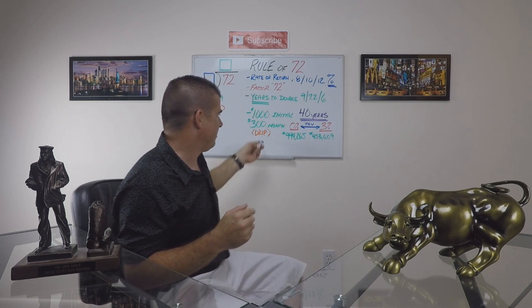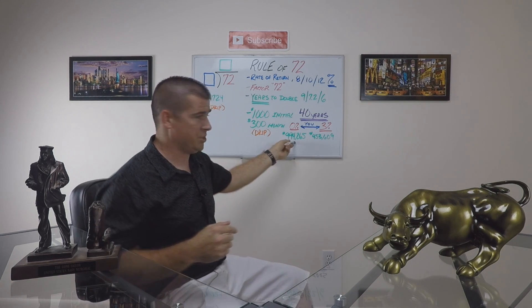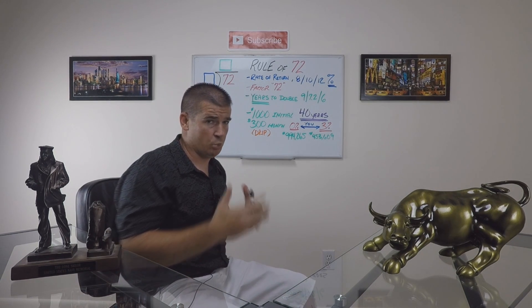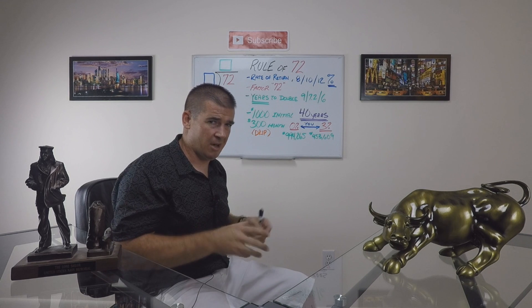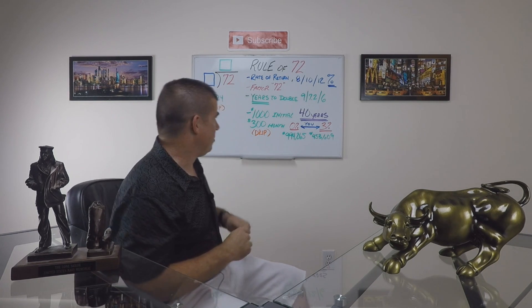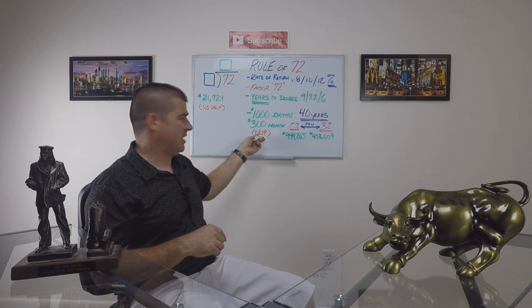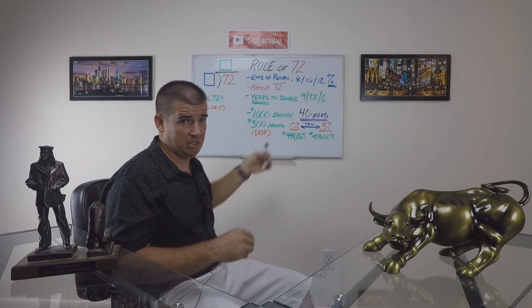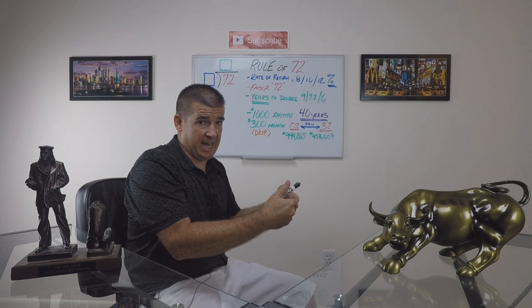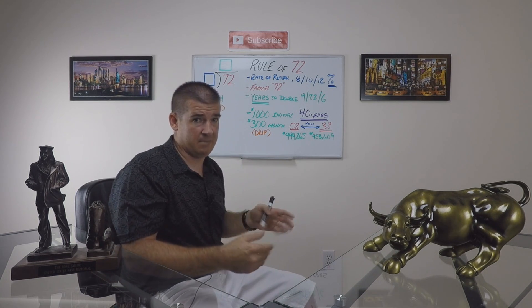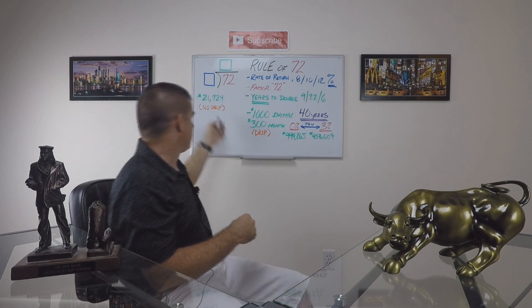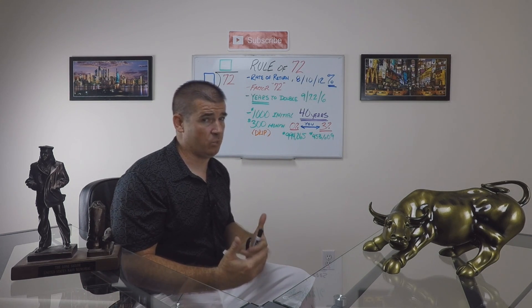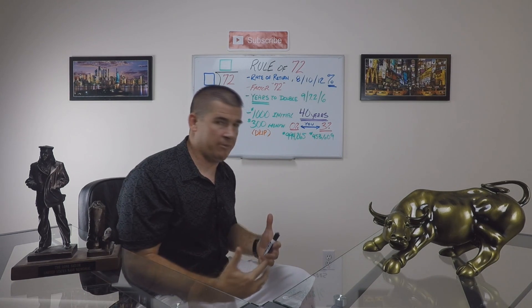A final thing I want to mention: the effect of the DRIP on this particular situation puts you up to a million dollars in this account. This is based on compounding interest, and the Rule of 72 basically gives you a snapshot of why compounding interest works. If you invest with no dividend reinvestment program at $300 a month over this same scenario, your initial $1,000 is going to actually double four and a half times over this 40-year horizon, rendering you only $21,724.